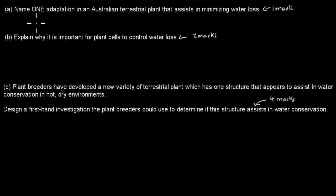Welcome back. So for this first one, it says name one adaptation, an Australian terrestrial plant that assists in minimizing water loss. So name an Australian plant and name the adaptation or response. I've chosen eucalyptus tree as a plant and the adaptation of thick, waxy cuticles. But I've also chosen, for example, spinifex and talked about the curling leaves so that they try to reduce their surface area.